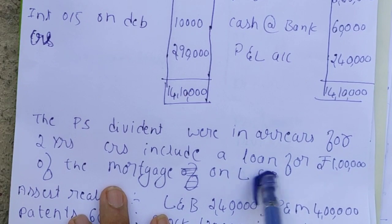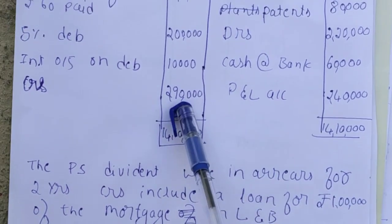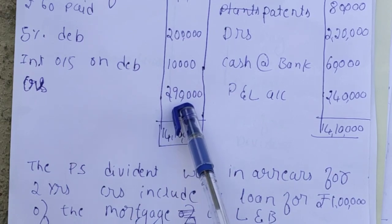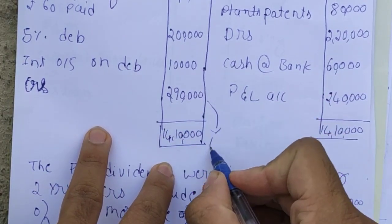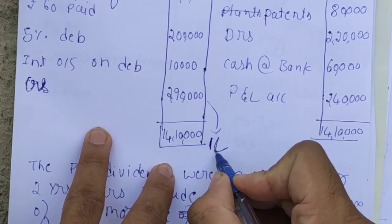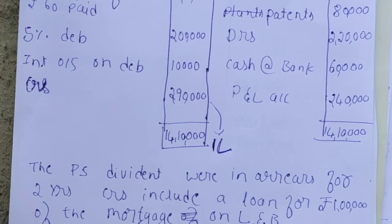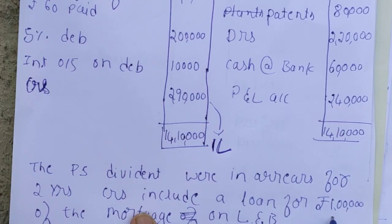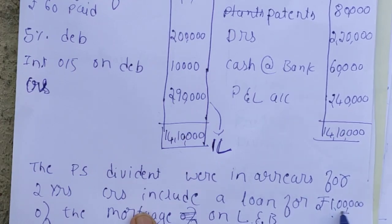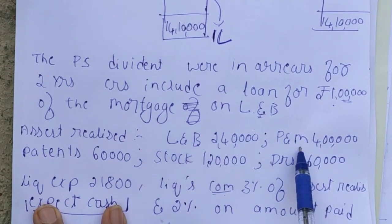Creditors include a loan of Rs.1 lakh secured by mortgage on land and buildings. Out of total creditors of Rs.2,90,000, Rs.1 lakh is secured against land and building. This means it is a secured loan. If land and building is sold, we first have to pay the secured creditors — the secured creditors are worth Rs.1 lakh.